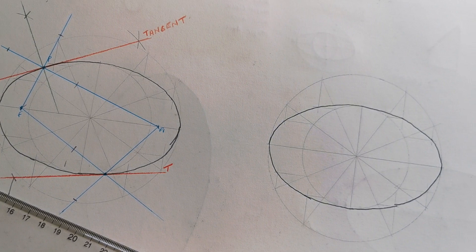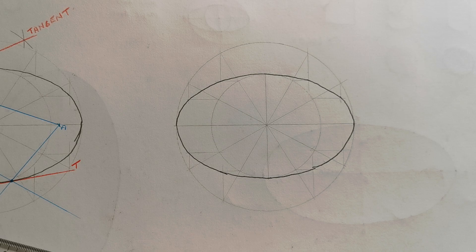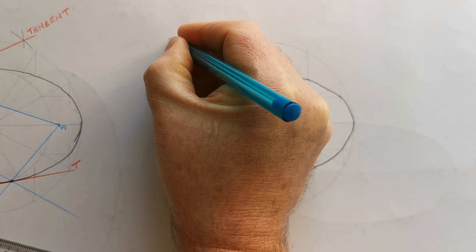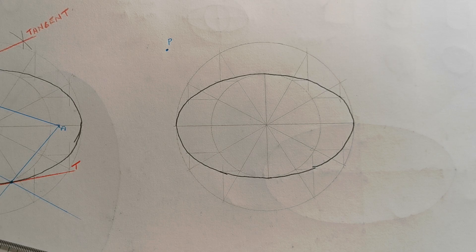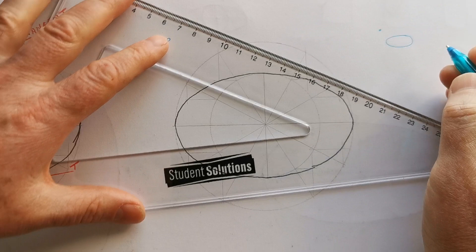Okay, so the second one that I'm going to look at—I'll just adjust the camera over here a little bit—the second one I want to look at is a little bit more difficult. It is drawing a tangent from a point P that's outside the curve.